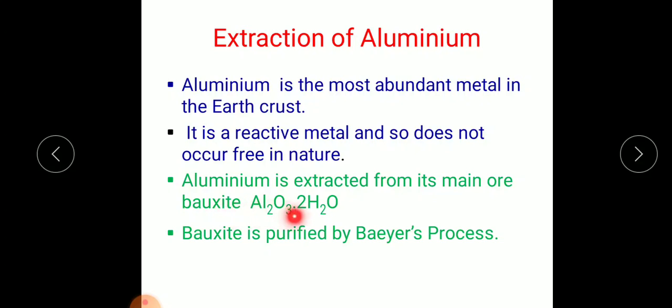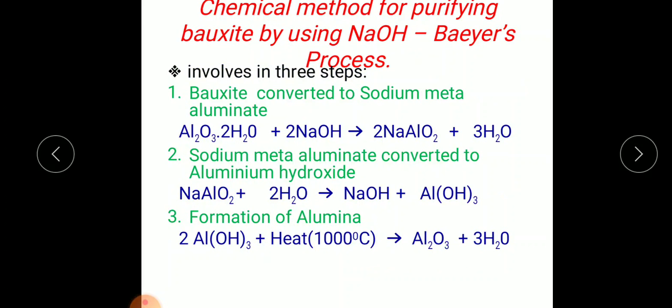Now this Baeyer's Process we need to see. So chemical method for purifying bauxite by using sodium hydroxide is known as Baeyer's Process.